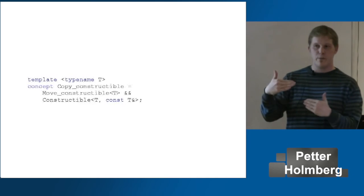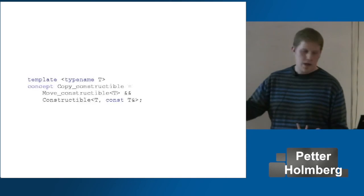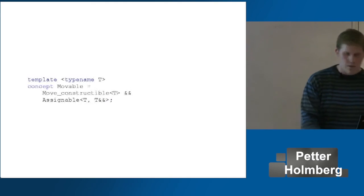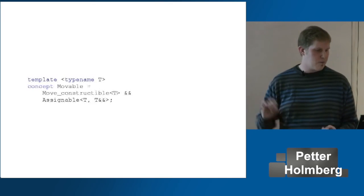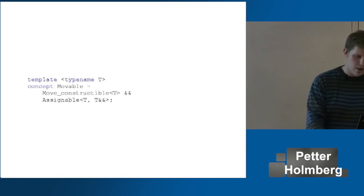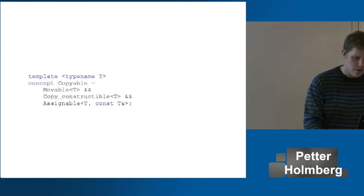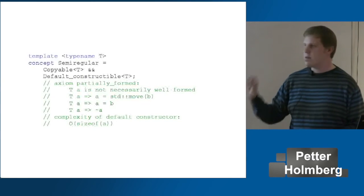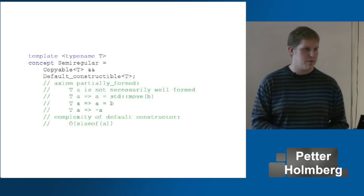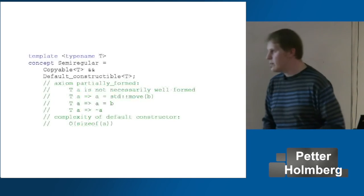Since we can fall back on copy construction when we have move construction, if we are copy constructible we are also move constructible. So if we are move constructible and move assignable, we are 'moveable'. I add 'moveable' as part of 'copyable', so I don't actually have to change anything here — 'copyable' now covers all four special member functions: copy and move constructor, copy and move assignment. And that's it.